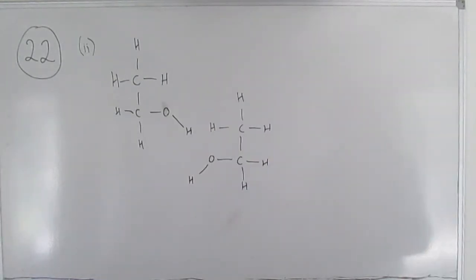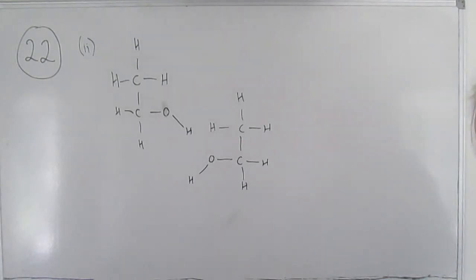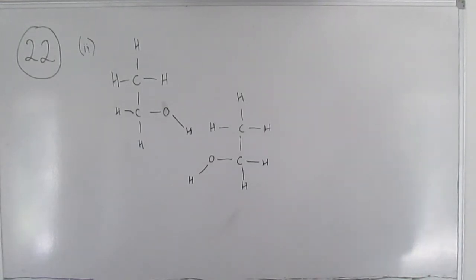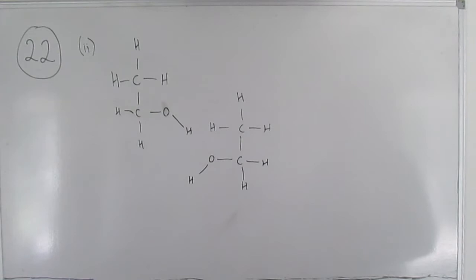Part 2 wants a bit of detail about those intermolecular forces in the case of ethanol, and they've given you a diagram to complete. Hopefully you're immediately thinking this is about hydrogen bonding. As soon as you see an OH — or indeed an NH or FH in a molecule — you know that gives the molecule the ability to form hydrogen bonds, and those will be the strongest of the intermolecular forces it can form.